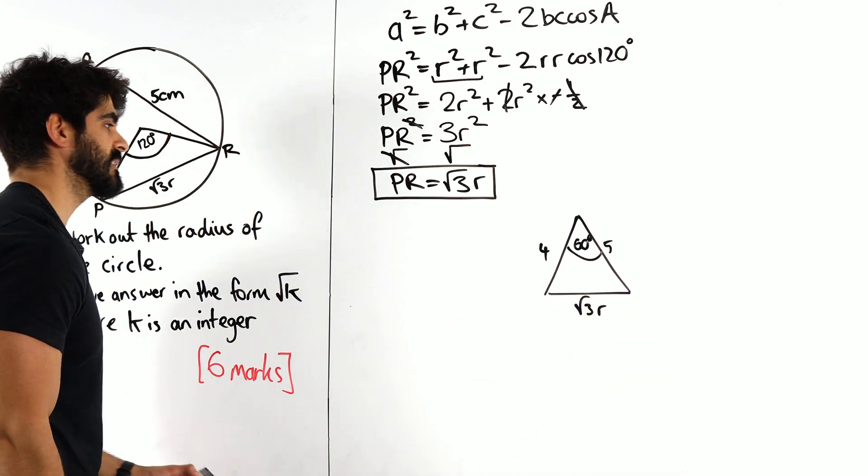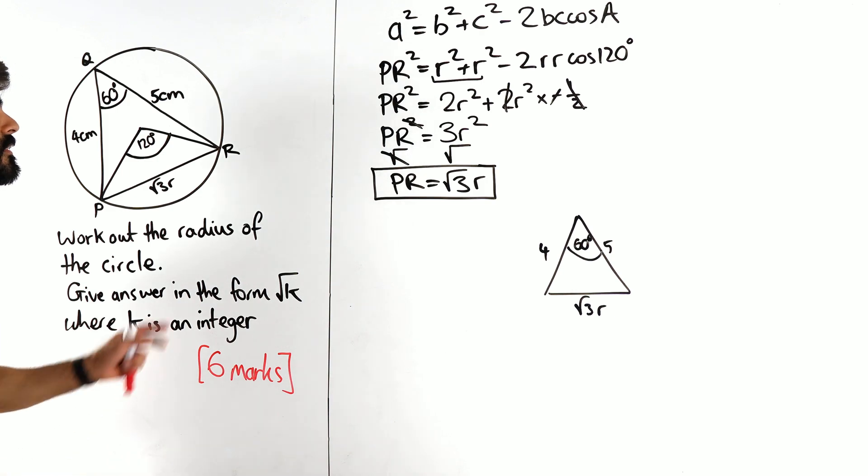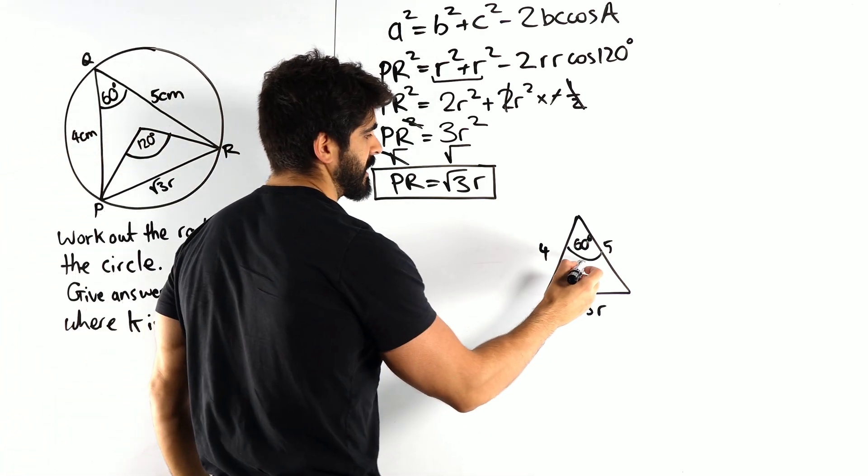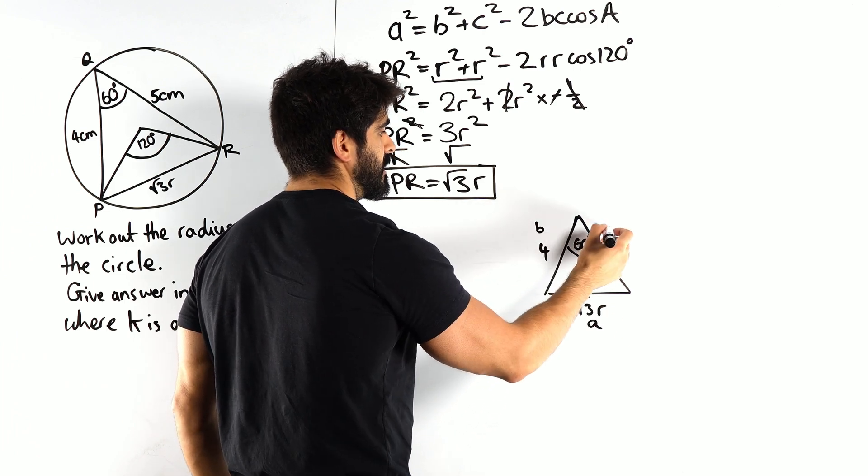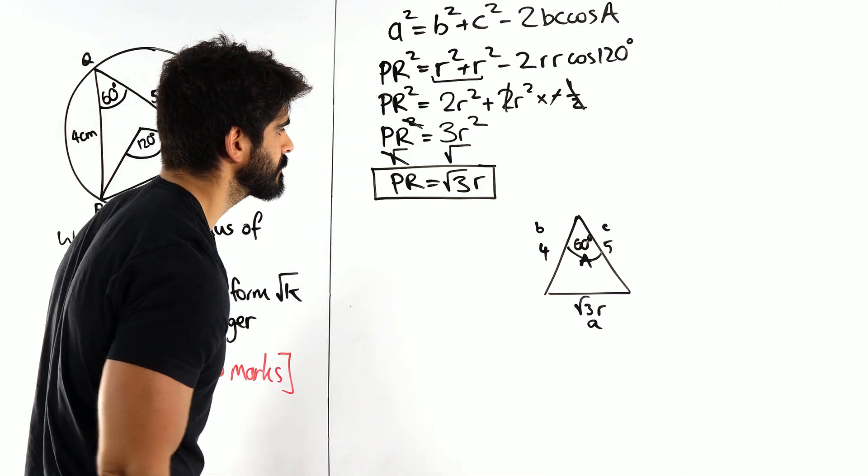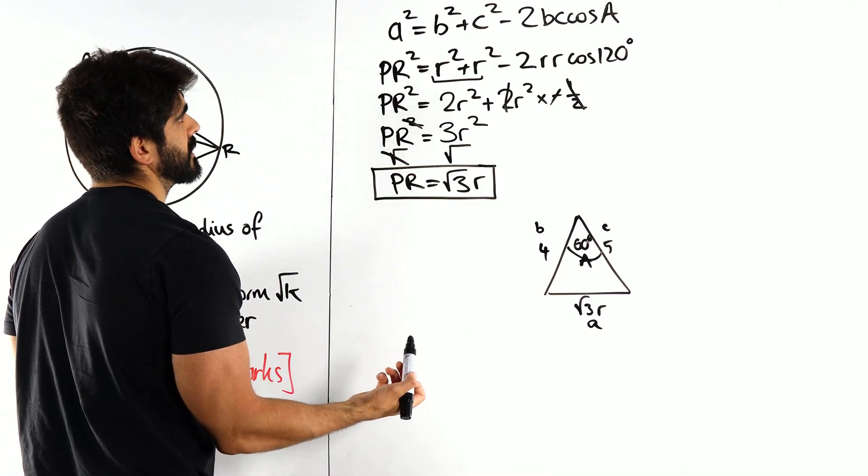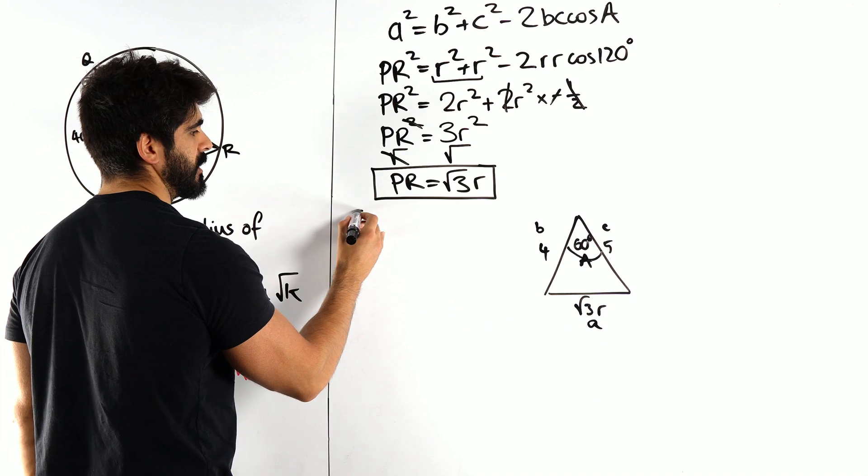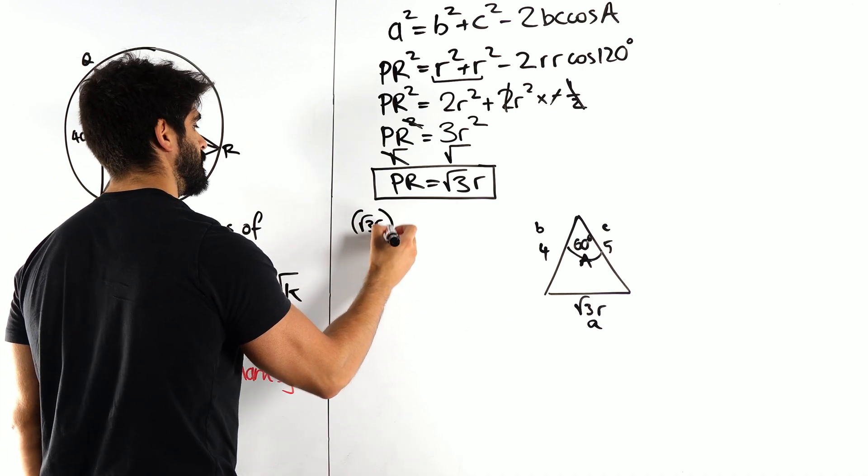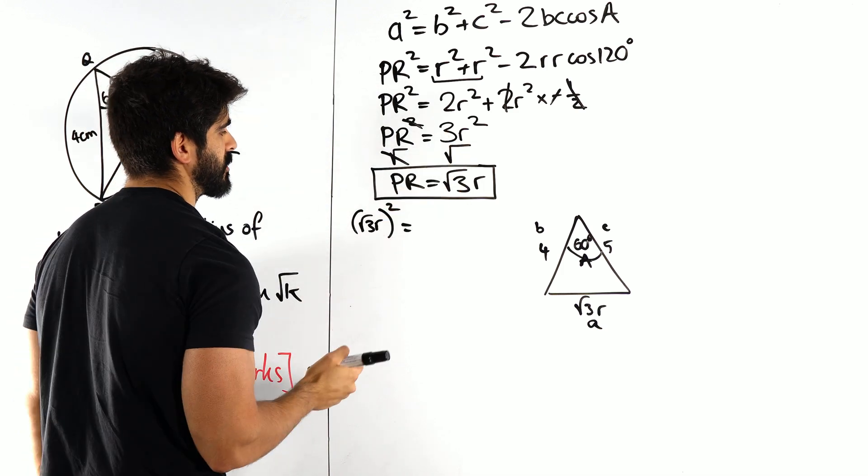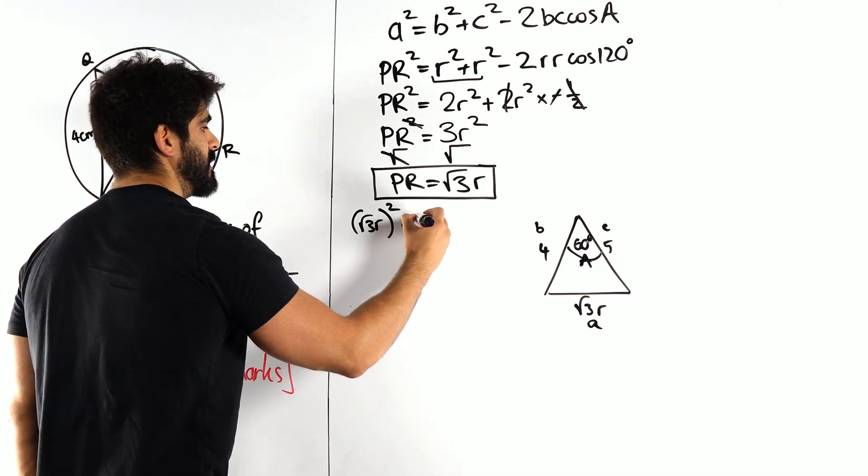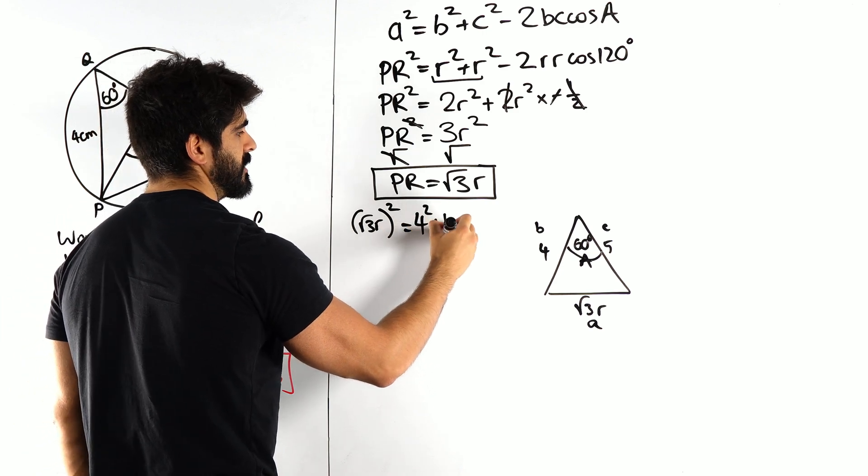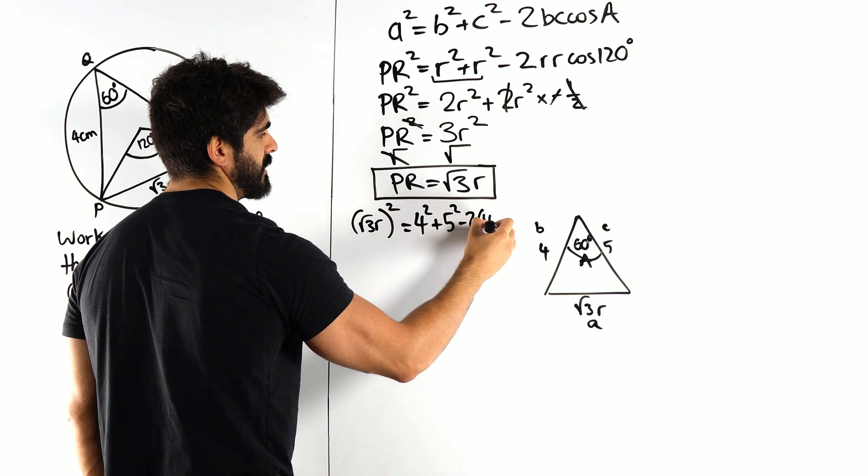I'm going to do the exact same thing I did previously. Now in this case, my capital A is 60 degrees, this is my lowercase a, here's my b, here's my c. So a squared, when I square this, which I already know is 3r squared, but root 3 squared is 3, then you have r squared, is b squared plus c squared minus 2bc.